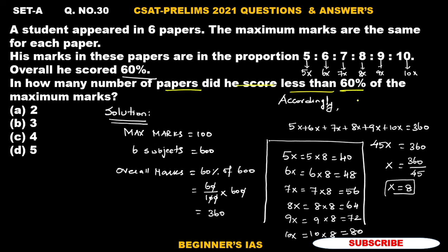Here we need to identify how many number of papers did he score less than 60%, which means less than 60 marks. Here 1, 2, 3. Three papers he has secured less than 60%. Therefore the answer would be option B, 3 is the answer for this question. With this I am concluding this question. Thank you all, have a good day.